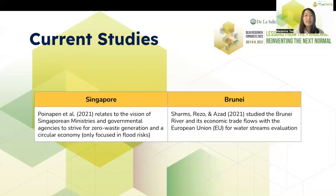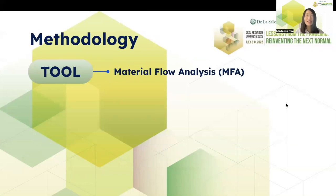For the current studies, there are some studies that relate the MFA to the respective countries. For Singapore, a study relates to the vision of Singaporean ministries and governmental agencies to strive for zero waste generation and the circular economy, however they only focus on flood risks. As for Brunei, a study showed that they used the Brunei River and its economic trade flows with the EU for water stream evaluation — again, only for water streams. Given this, we can see that their MFA only focus on certain aspects of their countries, which brings us to the main focus of our study: to apply the material flow analysis as our main tool for general country performance, and to cluster Singapore and Brunei together to compare them.